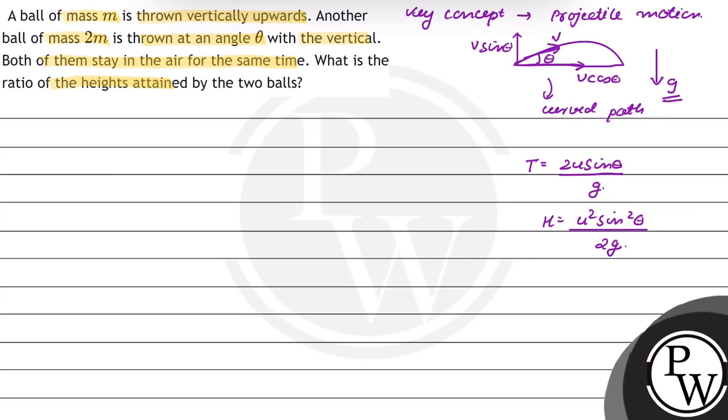The first ball of mass m is thrown vertically upwards, so for this ball θ will be equal to 90°. Another ball of mass 2m is thrown at an angle θ with the vertical. This will be taken as θ' from the horizontal. Since we are given that the time of flight is the same for both,